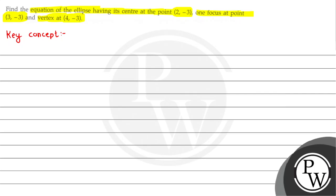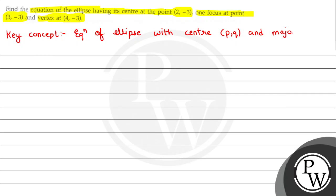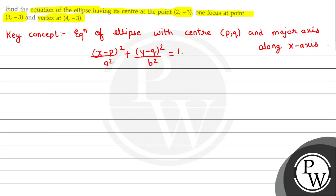So the key concept is the equation of an ellipse with center (p,q) and major axis along the x-axis. We have: (x-p)² divided by a² plus (y-q)² divided by b² is equal to 1.